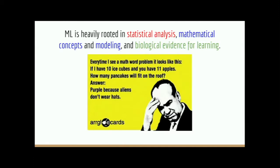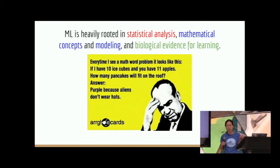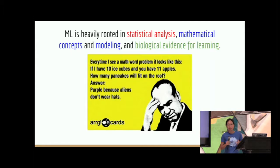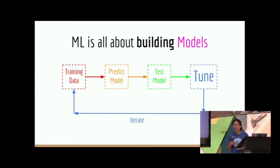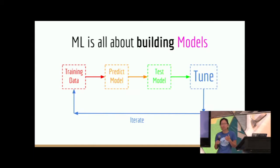Machine learning is heavily rooted in statistical analysis, mathematical models, and concepts. But it's also deeply rooted — especially in neural networks — in biological evidence for learning and the structure of how the brain works. Machine learning has the word 'learning' in it, but it really has to do with: how do we build models that can answer questions?